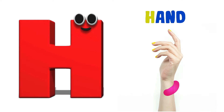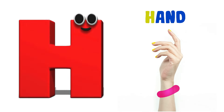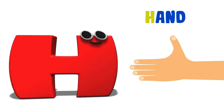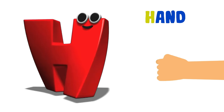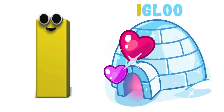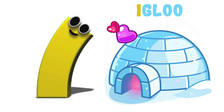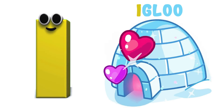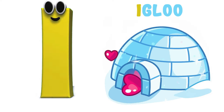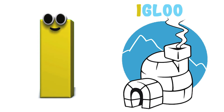H is for Hand, h-h-hand, h-h-hand, H-hand. I is for Igloo, i-i-igloo, i-i-igloo, I-igloo.